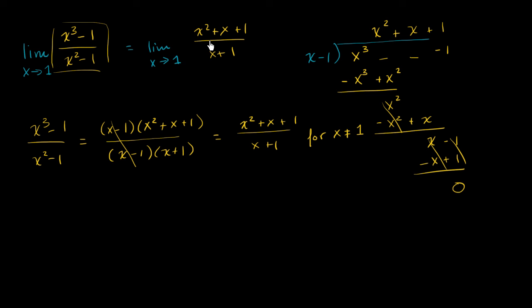And now this is much easier to find. You could literally just say, well, what happens as we get right to x equals 1? Then you have 1 squared, which is 1 plus 1 plus 1, which is 3, over 1 plus 1, which is 2. So we get that equaling 3 halves.